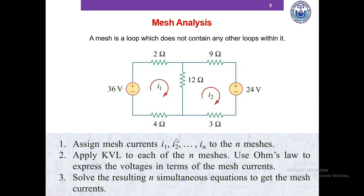We have two unknowns in this equation so we need two equations — one from each mesh. We solve the resulting simultaneous equations to get the mesh currents I1 and I2 up to IN.